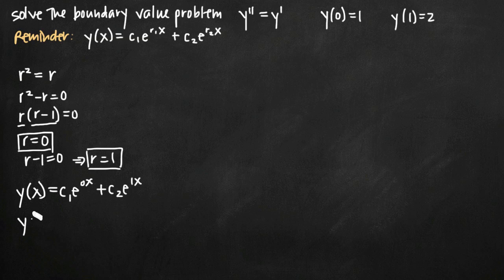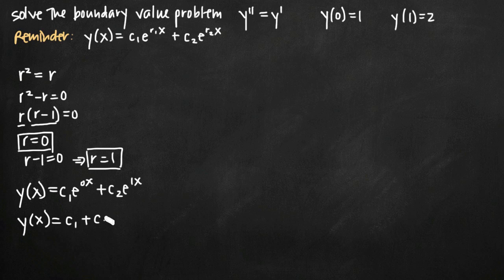We can simplify that: e to the 0x is e to the 0, which equals 1, so c₁ times 1 is just c₁. And e to the 1x is the same as e to the x, so we get y(x) = c₁ + c₂e^x. This is the general solution for our second order differential equation.